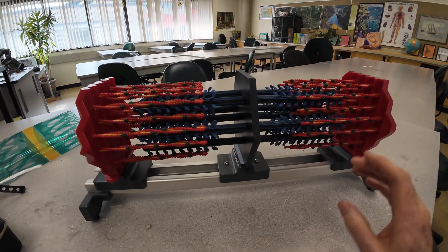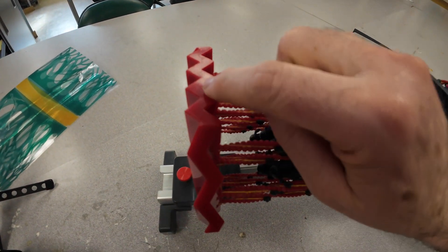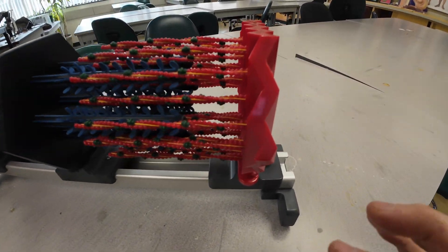So a sarcomere is defined by two ends, the Z-disc. Why are they called Z-disc? Well, here in the model you can see they look ziggy-zaggy, so they're called Z-discs or Z-discs, depending where you are in the world.